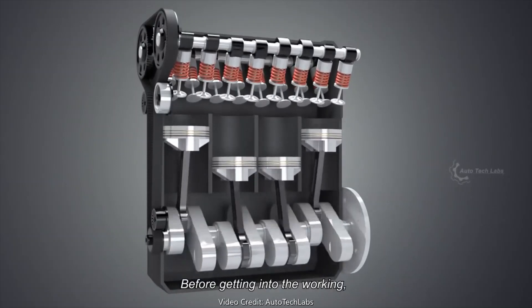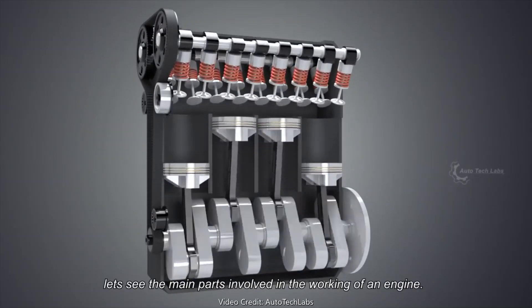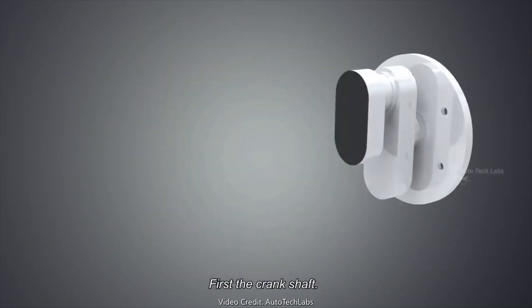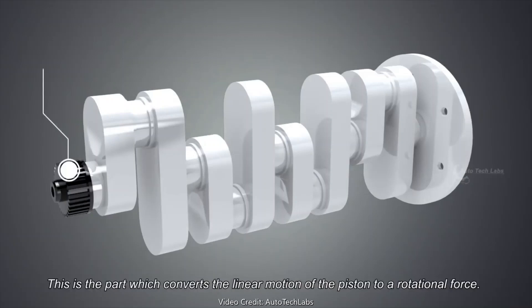Before getting into the working, let's see the main parts involved in the working of an engine. First, the crankshaft. This is the part which converts the linear motion of the piston to a rotational force.